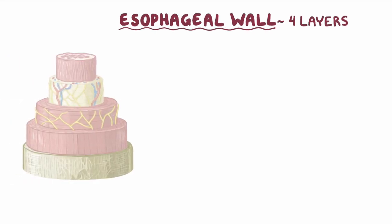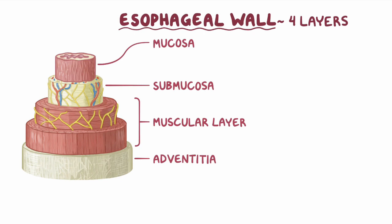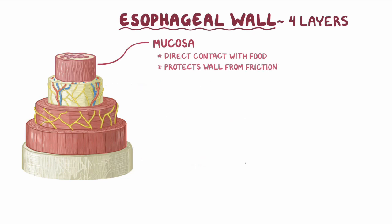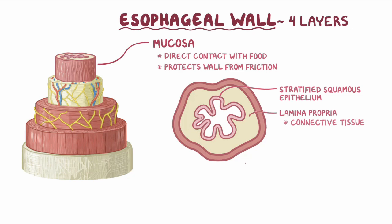The esophageal wall has four layers. From the outside in, these are the adventitia, the muscular layer, the submucosa, and the mucosa. The mucosa comes in direct contact with food and protects the esophageal wall from friction. The mucosa also has three layers of its own: a layer made of stratified squamous epithelium, a layer of connective tissue called the lamina propria, and a layer of muscle cells called the muscularis mucosae.